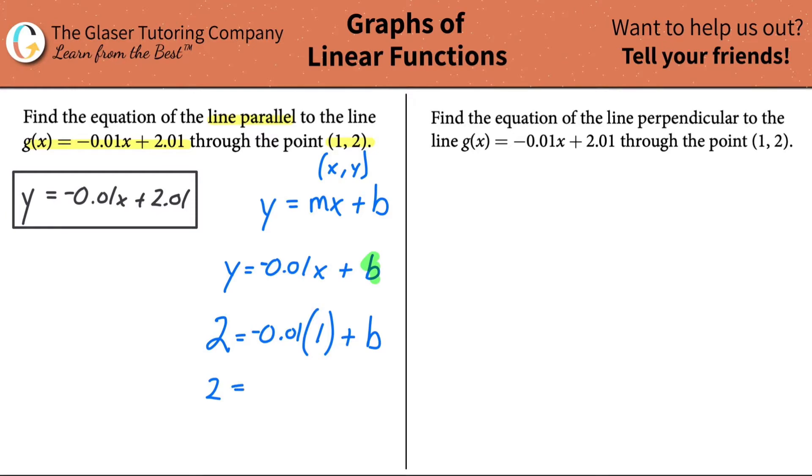One equation with one unknown. We can easily solve this. So this becomes 2 is equal to negative 0.01 plus b. Add then this on over, 0.01 plus 0.01. Great. And we get b now will be equal to 2.01.